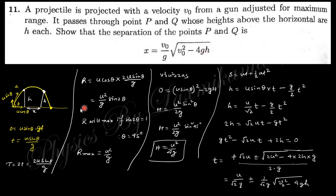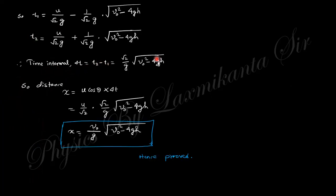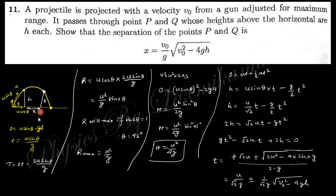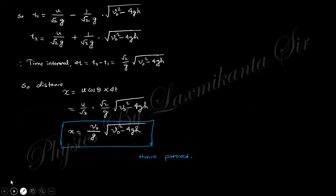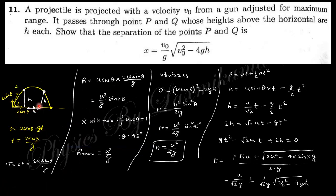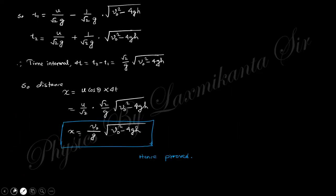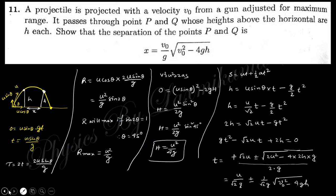The distance h is found using s = ut + ½at². Solving gives two values of time t1 and t2 (plus and minus). The time interval is the difference between t1 and t2. Since you know the speed along the x-direction, the separation between points P and Q equals velocity times the time interval.